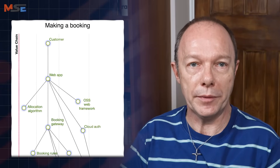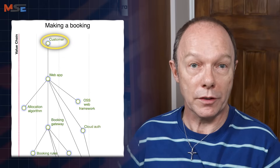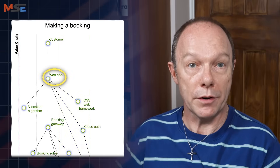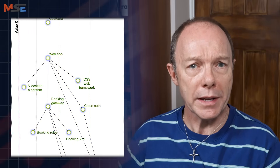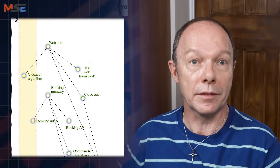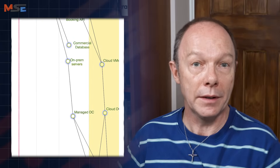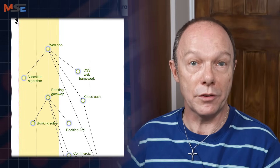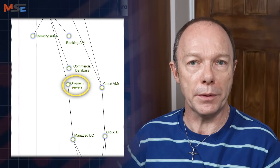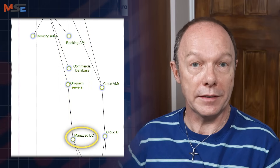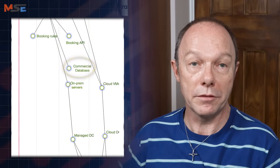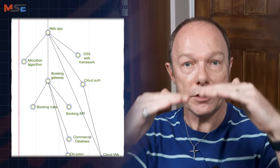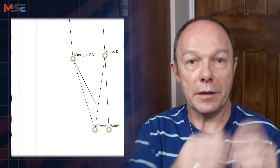As an example, let's say you have a booking website and you want to model the value chain of making your booking. The customer wants to book something which requires a web app. You probably started with an open source web framework, which is a product, and write your own app on it, which is custom. A booking might use your secret special allocation algorithm, which is Genesis. The web app runs in a cloud server, which is utility compute, accessed through cloud provided authentication, again utility. You may have written the booking gateway yourself, which would be a mix of Genesis and custom software, and for security reasons, you might deploy this in your own servers, vendor, in a service data center, also vendor, running a commercial database product, vendor again. So you start at the top with the customer and the booking app and model downwards, placing each new dependency in the appropriate place on the horizontal axis, depending on who's providing it.